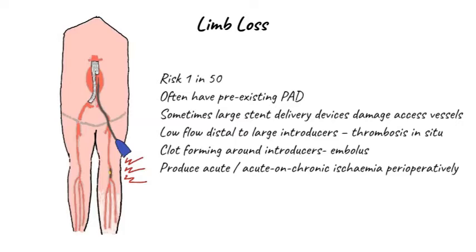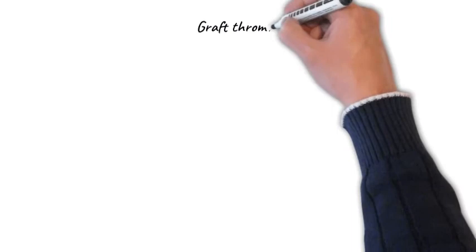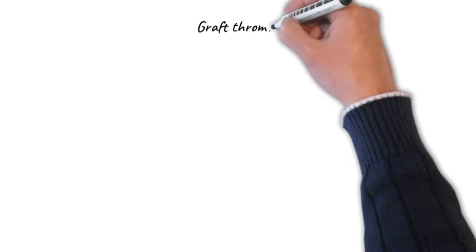Clot can form around the introducers, which may be knocked off into the bloodstream leading to an embolus. Any of these mechanisms can produce either acute or acute-on-chronic ischemia perioperatively, which if not recognised and dealt with promptly can result in limb loss. Once the stent graft is in place, one of the limbs of the graft may become occluded at any time from implantation to many years following the procedure, producing acute limb ischemia, claudication, or chronic limb-threatening ischemia.